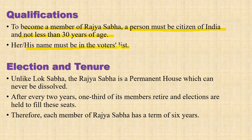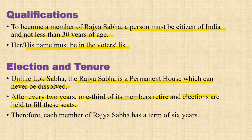His or her name must be in the voters list. Regarding election and tenure, unlike the Lok Sabha, the Rajya Sabha is a permanent house which can never be dissolved. Instead, after every two years, one-third of its members retire and elections are held to fill those seats. Since enough members are always present, it remains permanent. Each member of Rajya Sabha has a term of six years.